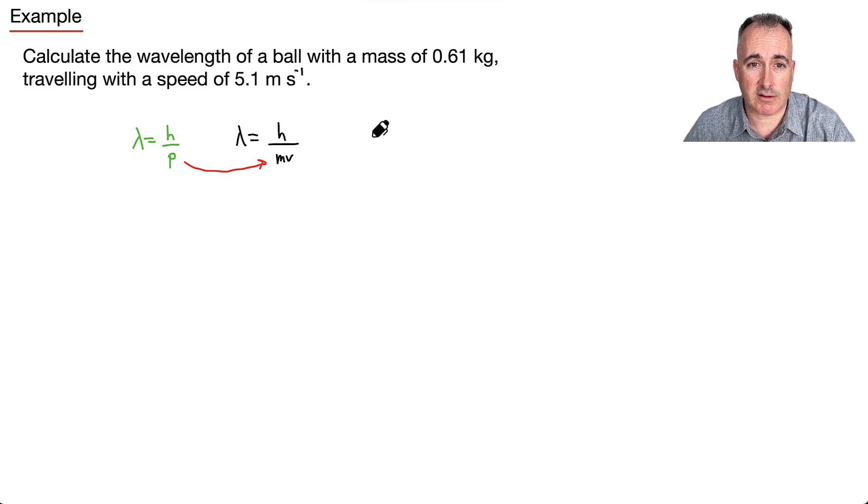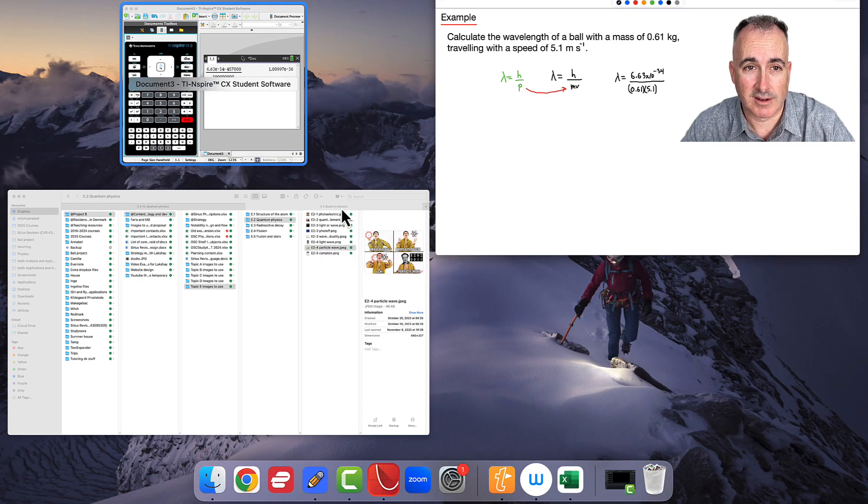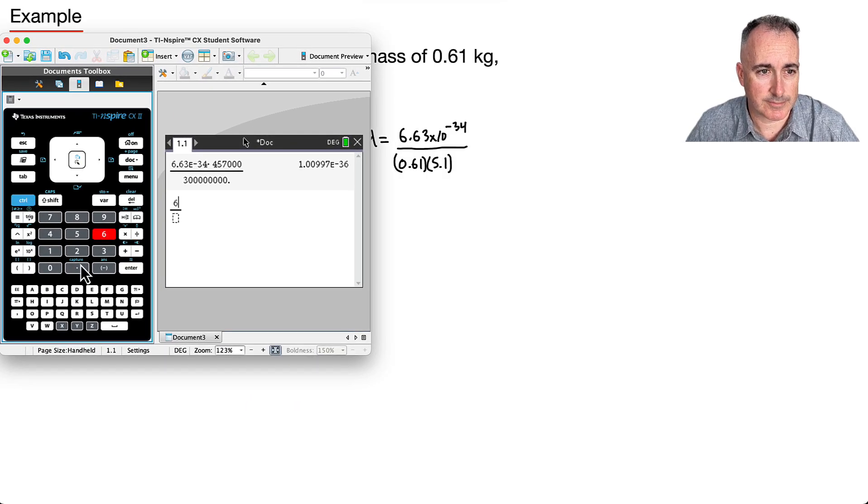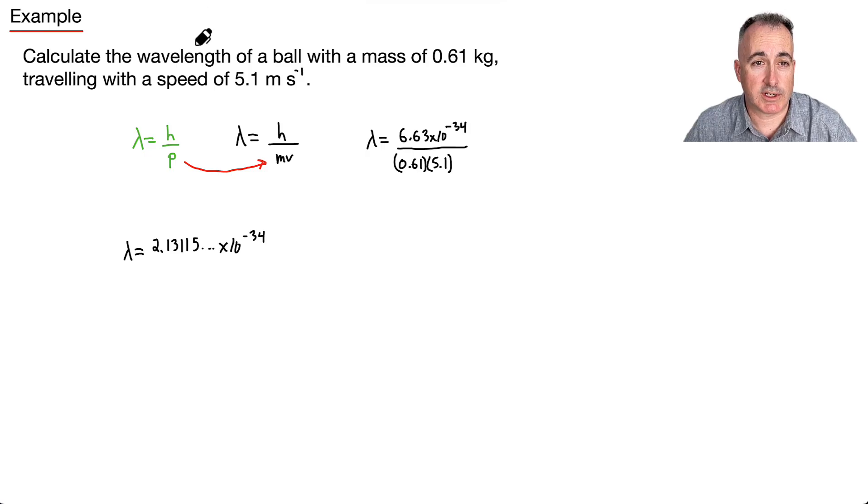All right, I'm just going to put in my values. So I've got lambda equals h, which is 6.63 times 10 to the minus 34. We're sure you're using that number a lot lately. Divided by the mass, which is 0.61 times the speed, which is 5.1. It's just this. I'm just going to put this into my calculator. It's not actually that hard, this example here. It's pretty easy. So again, just a nice pretty fraction. And my answer is 2.13115 times 10 to the minus 34. If I want only two significant figures then, I will say that it's approximately equal to 2.1 times 10 to the minus 34, and that'll be in units of meters.